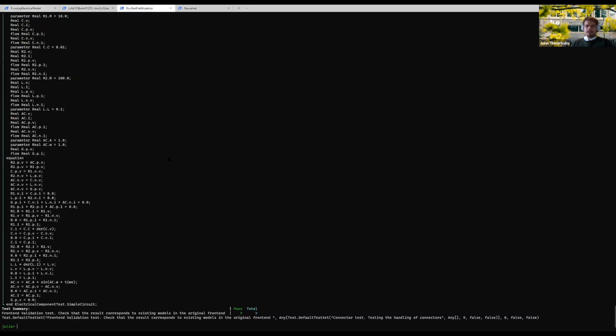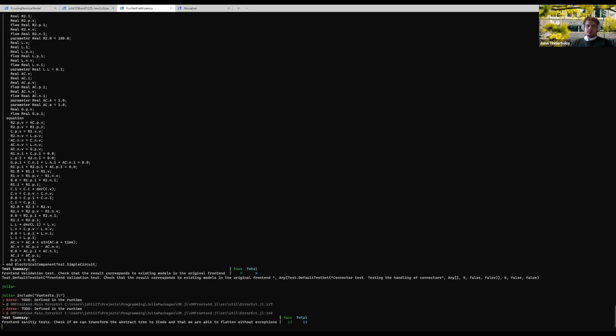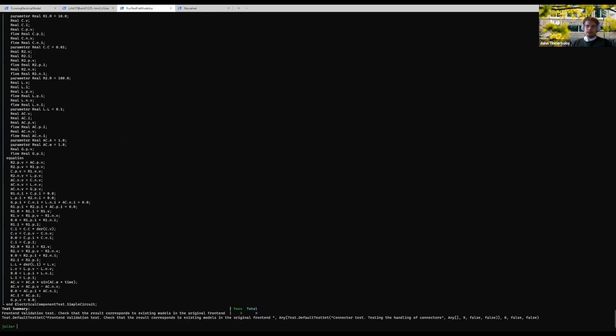So for instance, in our test suite here, we have the different tests. And of course, we can run a command like include run test.jl. And this is the frontend test for a compiler framework, which shows the flat Modelica.